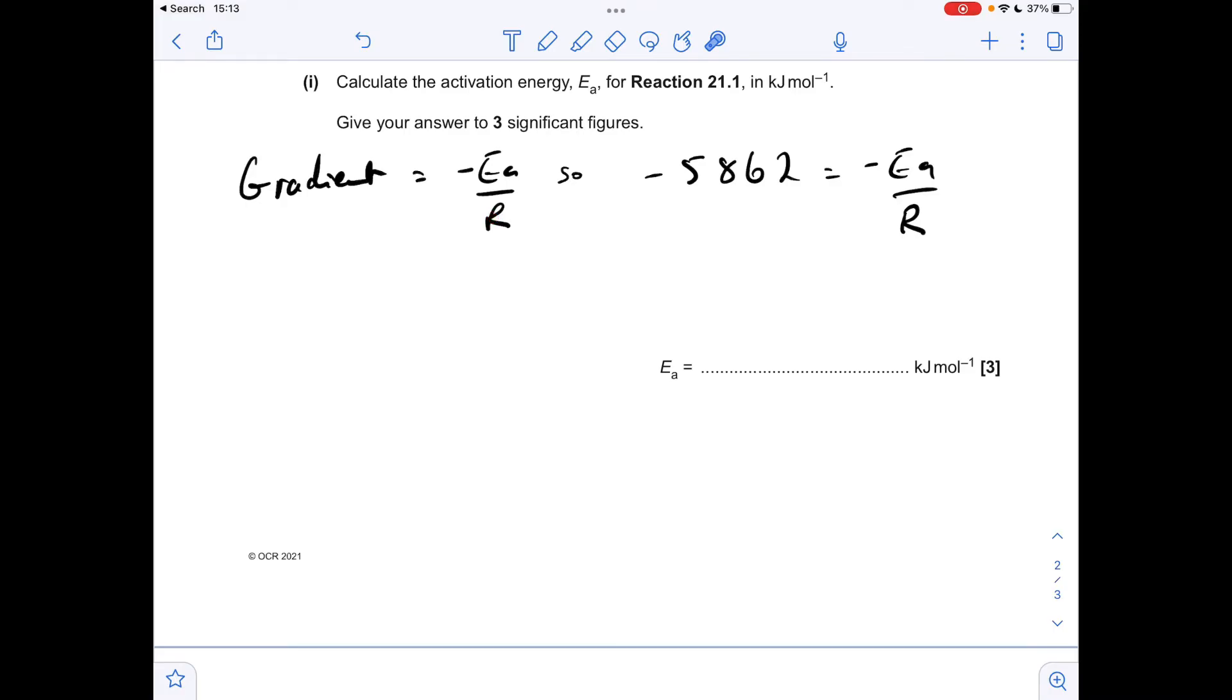That's just a reminder of the gradient being equal to minus EA over R. So my gradient came out at minus 5862. So the next thing I'm going to do is lose the minus signs, because I've got them on both sides. I now need to multiply the gradient by R, the gas constant. So I'm getting an answer of 48,737. The important thing to note is that we're in joules per mole, because there's joules in the gas constant units. So joules per mole, but they want it in kilojoules per mole.